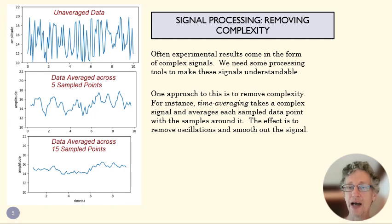The way time averaging works is, let's say at time two, we have a reading right here. If we time average over five data points, what we do is we say at time two, I'm not going to use this data point. Instead, I'm going to take this data point and two on the right side of it, and two on the left side. And I'm going to average those together and say that my value at two is that average.